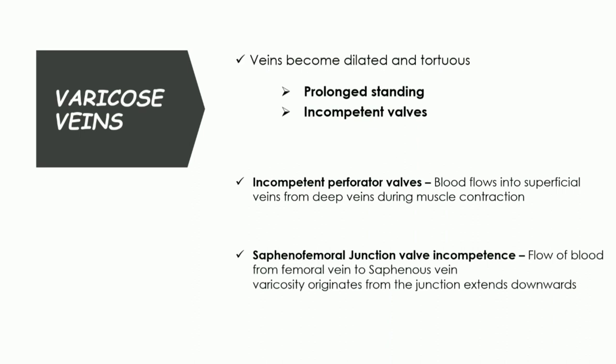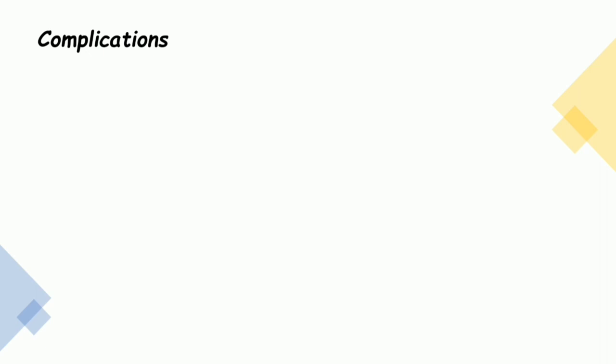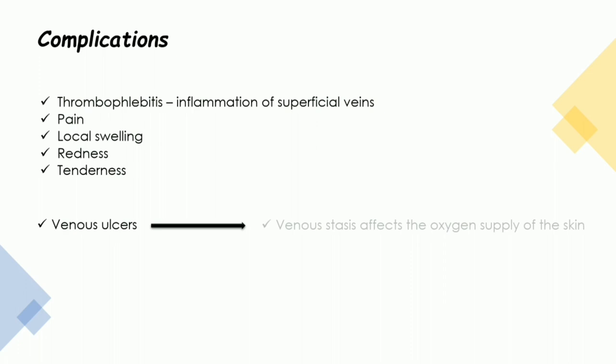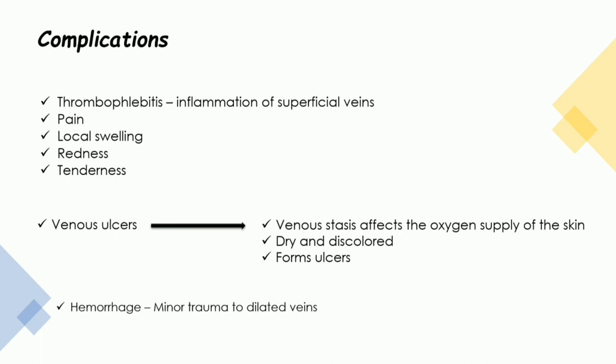Now what are the complications associated with varicose veins? Most importantly it causes inflammation of the veins, called thrombophlebitis, associated with pain, local swelling, redness, and tenderness — all signs of inflammation. Varicose veins can also cause venous ulcers: because of stagnation of blood there is deficient oxygen supply to the skin, leading to ulcer development in the leg. Additionally, the dilated veins can easily undergo hemorrhage if there is any trauma.